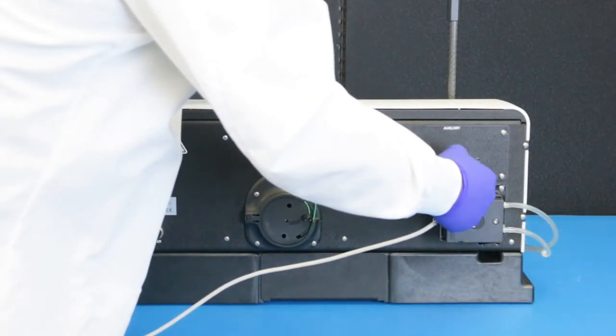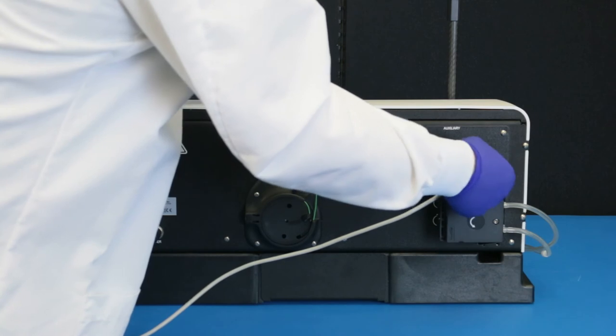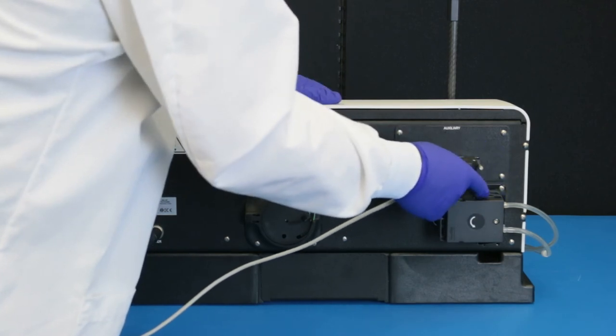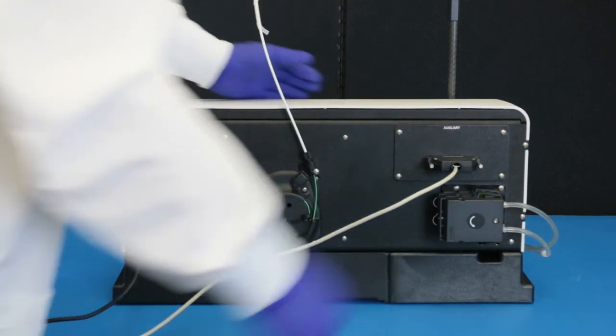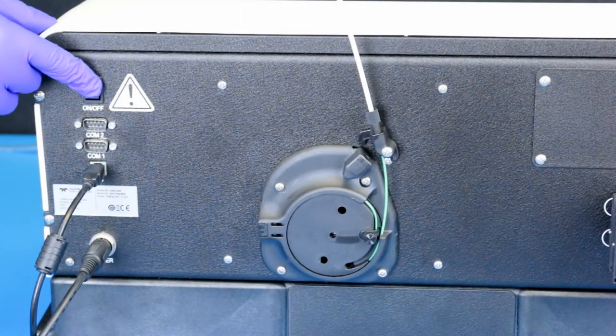If your auto sampler has an auxiliary port, plug in the cable and secure it with the two thumb screws. Now you can turn on the auto sampler.